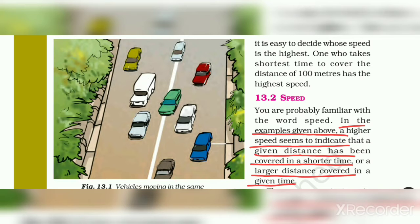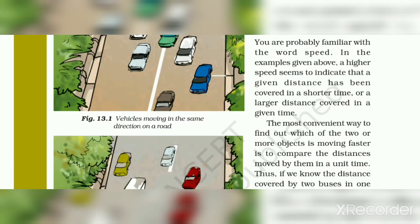So, from the above example, the higher speed is the short time. And the higher speed also means more distance covered in a given time. The most convenient way to find out which of the two or more objects is moving faster is to compare the distances moved by them in a unit time.